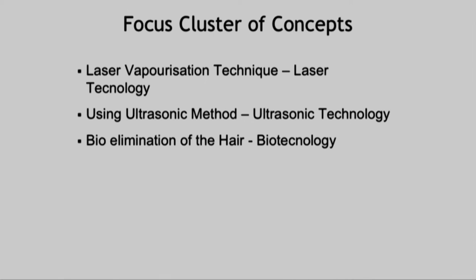Once you have all these ideas, remember the stages in the base model: concept generation, concept focus, selection of one concept, and then going for production. You need those structures — you just cannot have a lot of ideas without them. Out of 10 ideas you choose 3, then from 3 you choose 1. Finally the laser vaporizing technique was chosen because the technology was matured and available in the market.